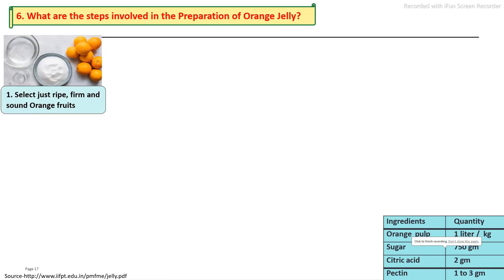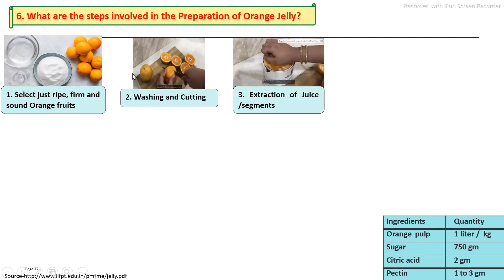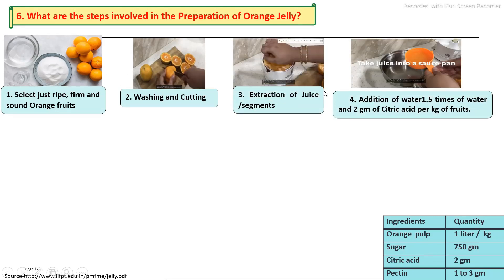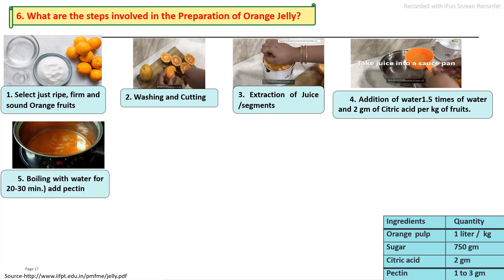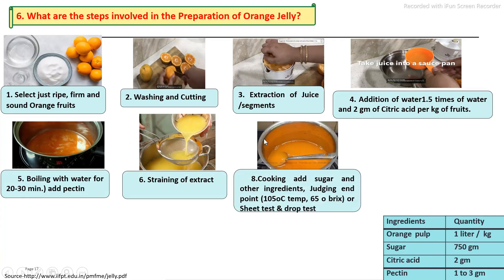For orange jelly manufacturing: properly ripe fruits are selected, then washing and cutting is carried out. Juice is extracted using halving and reaming machines. The extracted juice is mixed with water and cooked to extract pectin. After filtration, sugar and other ingredients are added and cooking continues until the endpoint is reached.